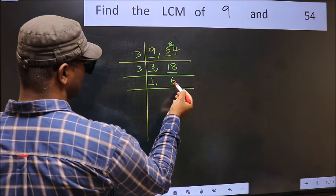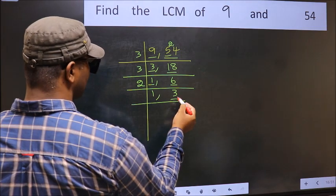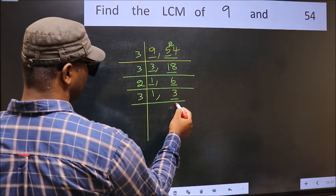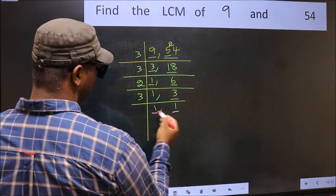Now we got 1 here. So focus on the next number 6. 6 is 2 times 3 is 6. Now we have 3. 3 is a prime number. So 3 times 1 is 3. So we got 1 in both places.